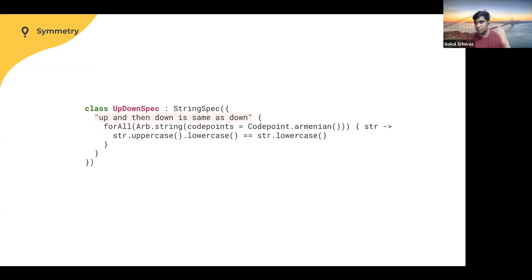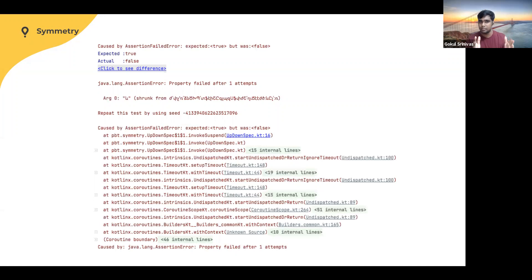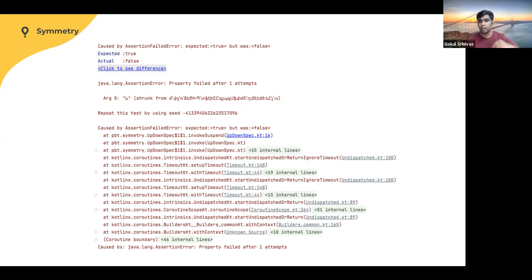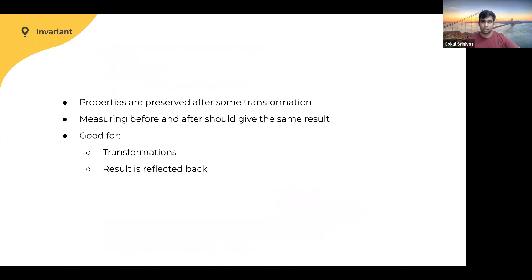Another symmetry example: take a string, convert it to uppercase, convert it back to lowercase — it should equal just converting it to lowercase. In this example the character set is restricted to Armenian, which is actually a valid real-life use case since we're starting off in Armenia. The property test actually fails because certain Armenian characters don't convert cleanly between uppercase and lowercase, and this test catches that.